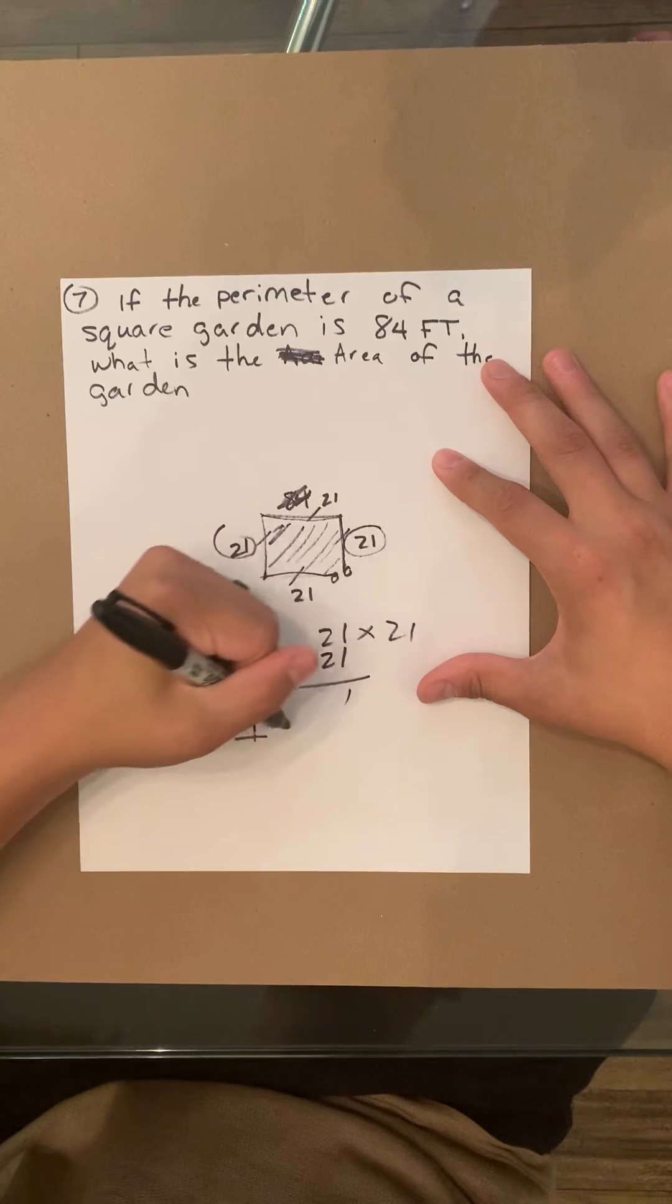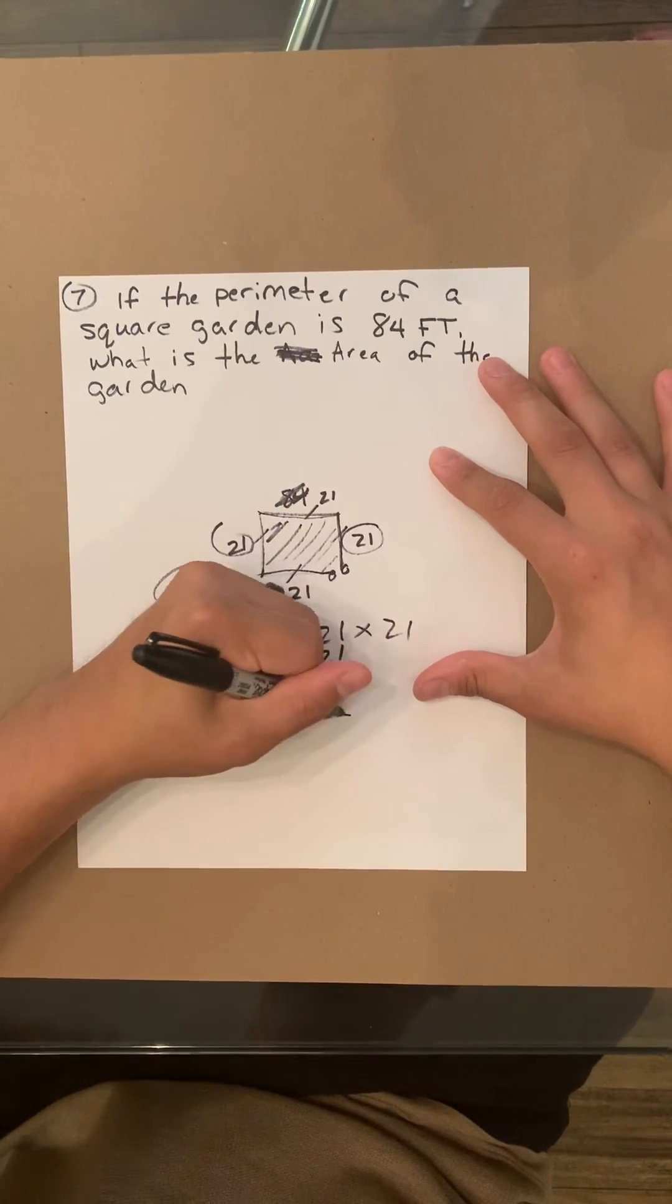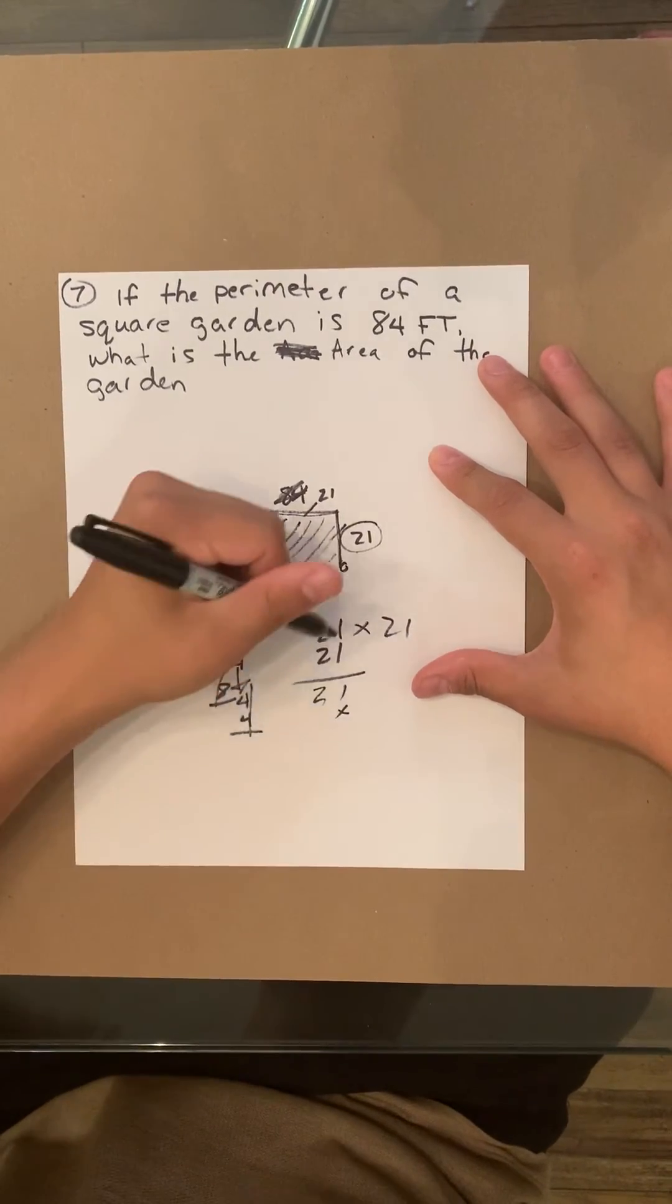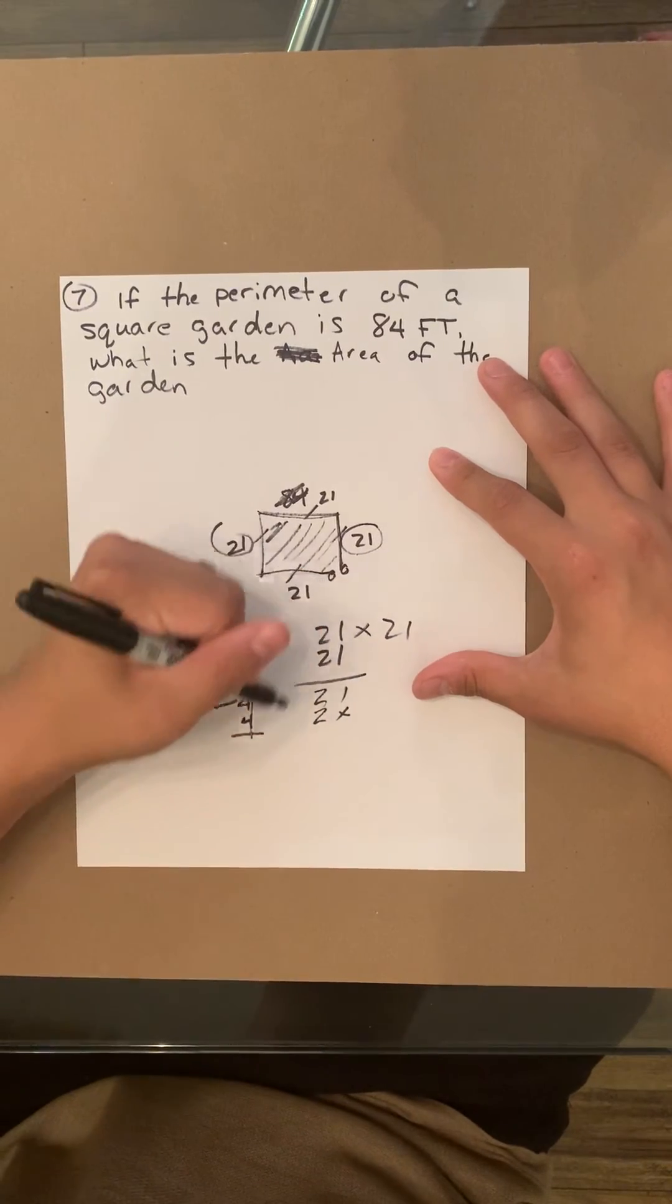1 times 1, 1. 1 times 2, 2. You're going to put that x there as the 0. 2 times 1, 2. 2 times 2, 4.